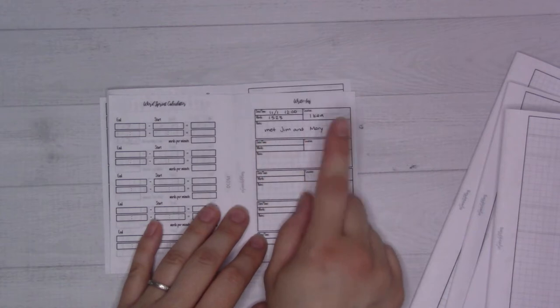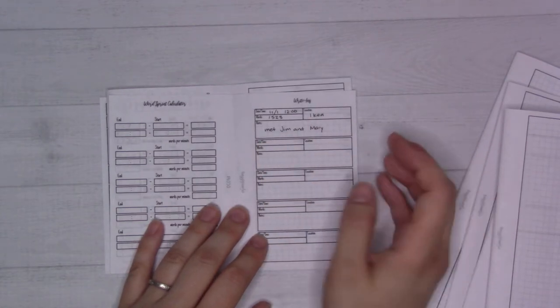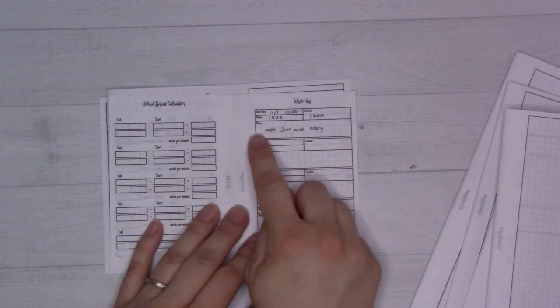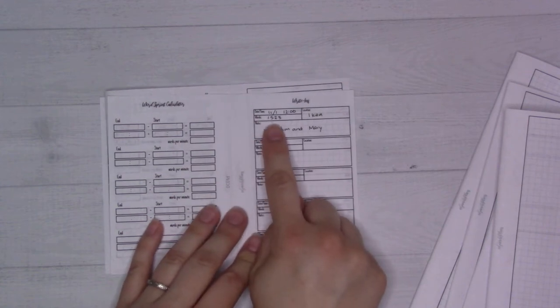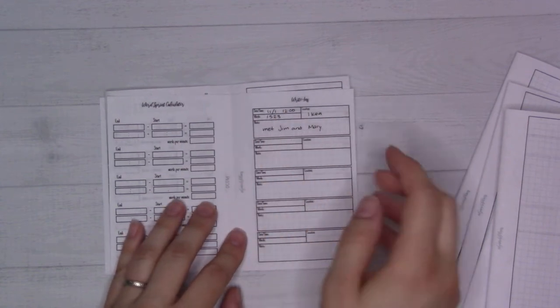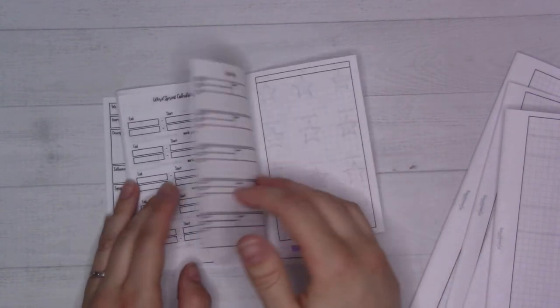It can be how much you wrote or what the venue was like or who you met. I put I met Jim and Mary because those are very generic names, but importantly, there's a place to write how many words you got written at the event.